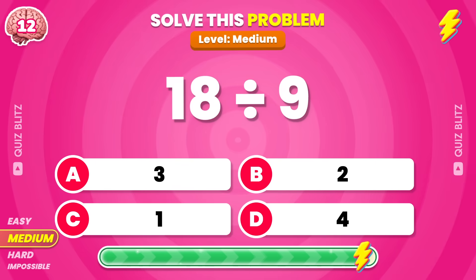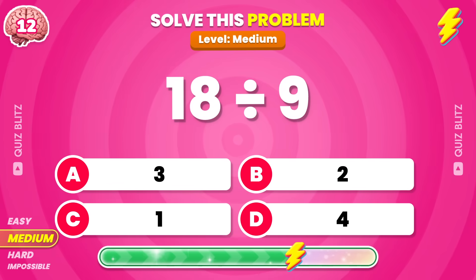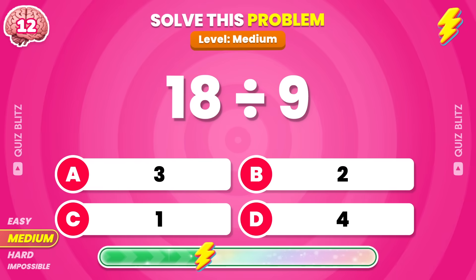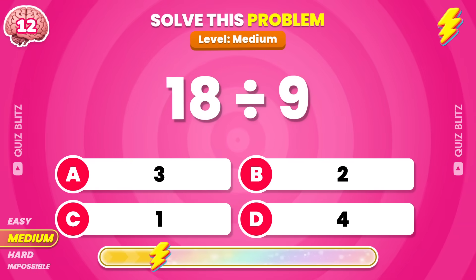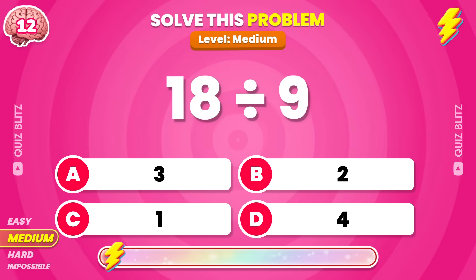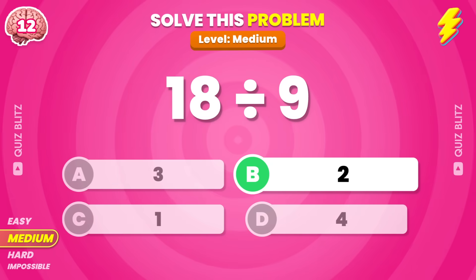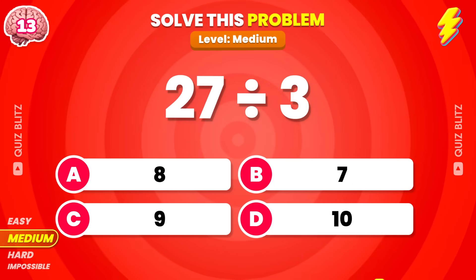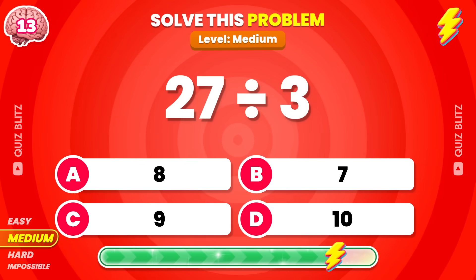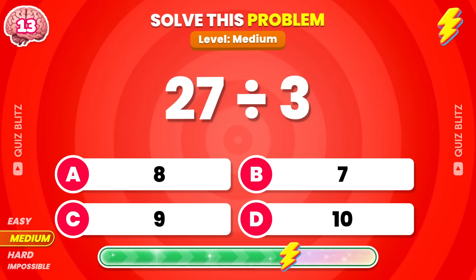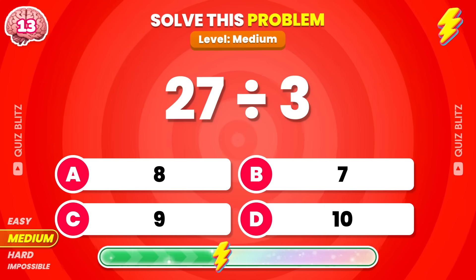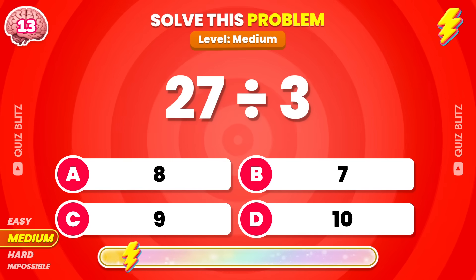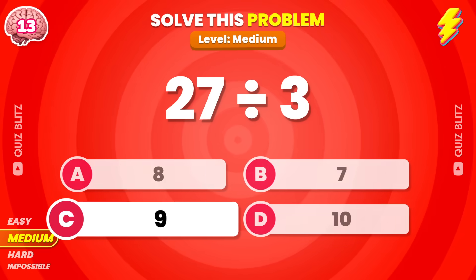How much is 18 divided by 9? The answer is 2. 27 divided by 3? The answer is 9.